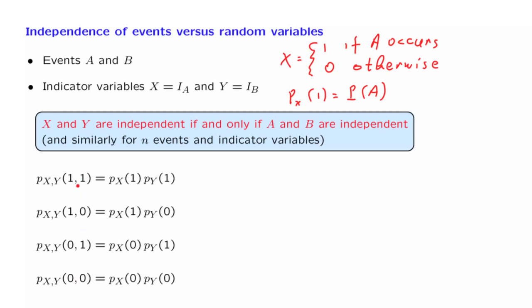And this factorization must be true no matter what arguments we use inside the joint PMF. And the combination of X and Y, in this instance, have a total of four possible values. These are the combinations of zeros and ones that we can form. And for this reason, we have a total of four equations. These four equalities are what is required for X and Y to be independent.